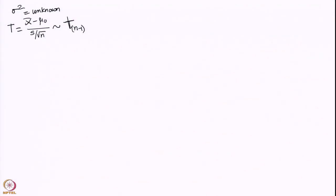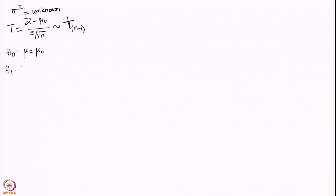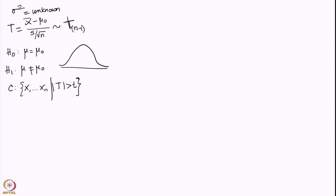Since the distribution is completely known given n, we can proceed with testing. For H0: mu equals mu-zero versus H1: mu not equal to mu-zero, the critical region is all samples x1, x2, ..., xn such that the absolute value of T is greater than some t. The t-distribution is symmetric and we reject in either tail beyond the critical value.